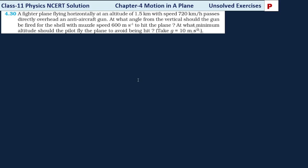Next question, question number 30. Very interesting question — a fighter plane is flying horizontally at altitude 1.5 km with speed 720 km per hour, and passes directly overhead an anti-aircraft gun. A gun is set on the horizontal surface and the fighter plane passes just above it. The speed is 720 km per hour.